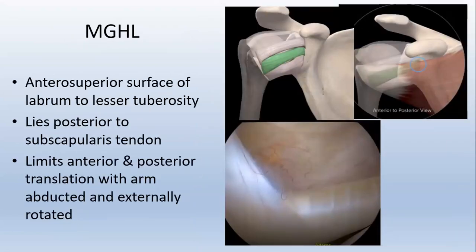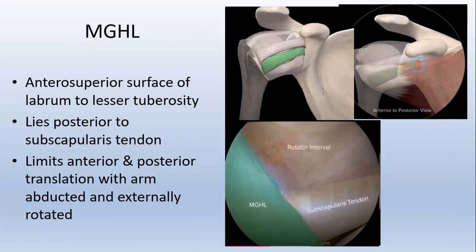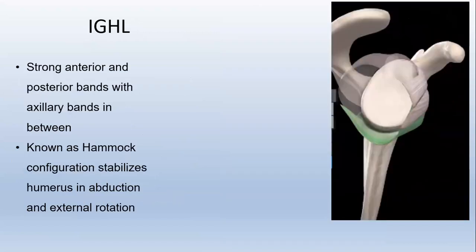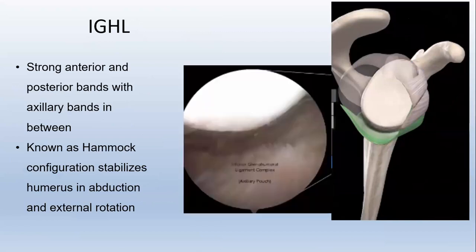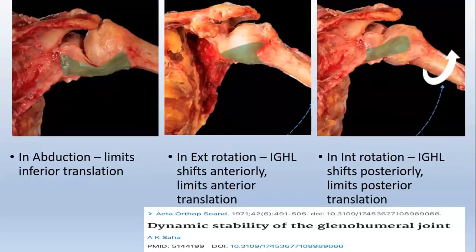The middle glenohumeral ligament has its attachment on the antero-superior surface of the labrum to the lesser tuberosity and lies posterior to the subscapularis, thereby limiting anterior and posterior translation with the arm abducted and externally rotated. The inferior glenohumeral ligament has strong anterior and posterior bands with axillary fibers in between, known as a hammock configuration, which stabilizes the humerus in abduction and external rotation and forms the axillary pouch inferiorly. In abduction, the IGHL limits inferior translation. In external rotation, the IGHL shifts anteriorly and limits anterior translation. In internal rotation, the IGHL shifts posteriorly, limiting posterior translation.